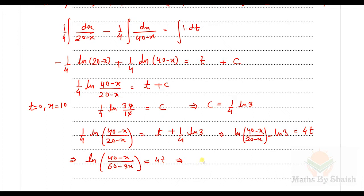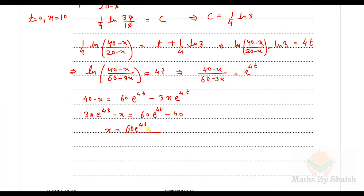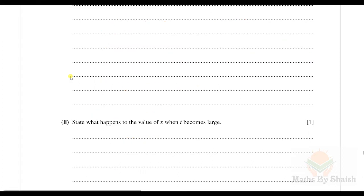Removing the logarithm by taking the exponential: (40 − x)/(60 − 3x) = e^(4t). Cross-multiplying: 40 − x = 60e^(4t) − 3x·e^(4t). Collecting x terms: x(3e^(4t) − 1) = 60e^(4t) − 40, so x = (60e^(4t) − 40)/(3e^(4t) − 1). That is the expression for x in terms of t.